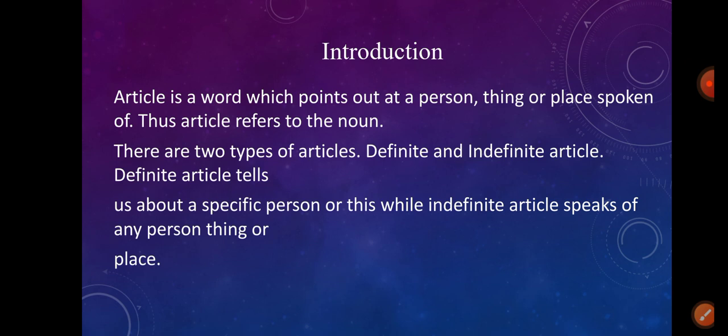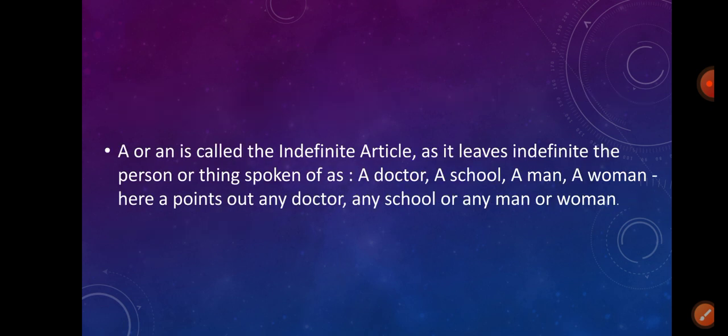There are two types of articles: definite and indefinite. The definite article tells us about a specific person or thing, while the indefinite article speaks of any person, thing, or place, and is called the indefinite article, as it leaves indefinite the person or thing spoken of — for example: a doctor, a school, a man, a woman.